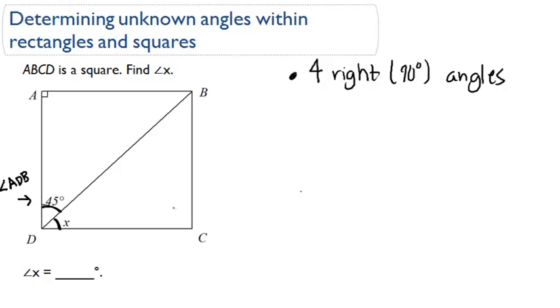We know that a square, so this main shape here, this square has four right angles. Four right angles.